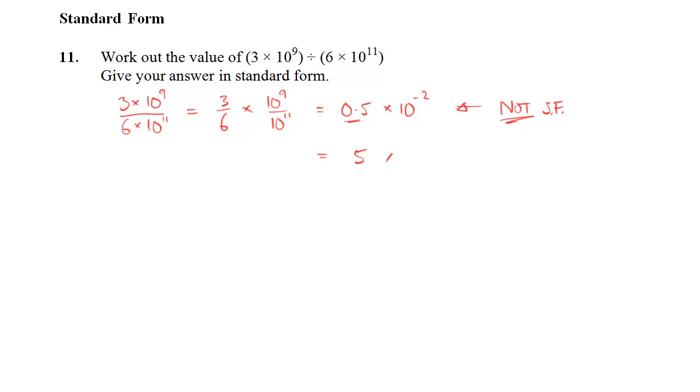So to correct this, we'll take that and make it into a 5. And what power do we need here? Well, think about what's happened to the 0.5. We've made that 10 times bigger to make it the right size. So to compensate, we have to make the power of 10 10 times smaller.